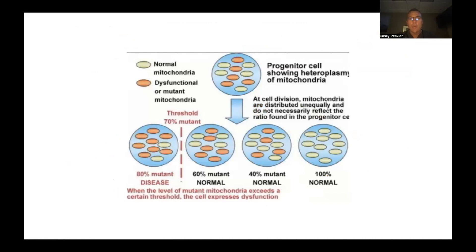So how do we meet that threshold of disease? In this simplistic model, when we're born or early in life, we have a lot of normal mitochondria — essentially 100% normal. As mutations start to build up, you start to see dysfunctional or mutant mitochondria in red, and that is the percent heteroplasmy. As we get towards 40% heteroplasmy, there may be a threshold for diseases like obesity, high blood pressure, or diabetes. At 60%, there's another threshold for other pathologies. Dr. Doug Wallace's group found that as mitochondrial heteroplasmy increases, you progressively lose function and develop the diseases we're all familiar with.